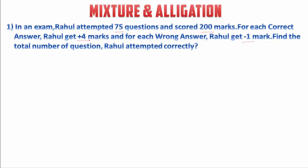So it is given that Rahul attempted 75 questions and scored 200 marks. For each correct answer he got 4 marks and for each wrong answer minus 1 mark. We have two cases: if all questions attempted are wrong, he will get 75 × (−1) = −75 marks. If all questions attempted are correct, he will get 75 × 4 = 300 marks.